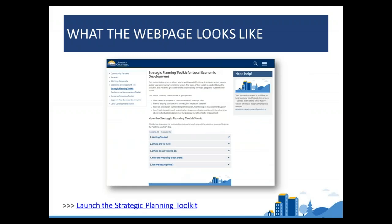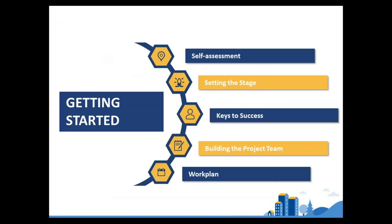On the webpage, there are five different components: getting started, where are we now, where do we want to go, how are we going to get there, and are we getting there — each with its own sub-components. I'm going to turn it over to Kathy to walk you through those five pieces. As Mark mentioned, the first component — getting started — contains the self-assessment so you understand as a community what you've already created and what still needs to be done, building the project team, and developing the work plan that will take you forward.